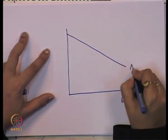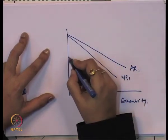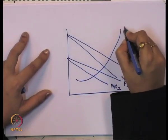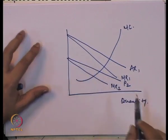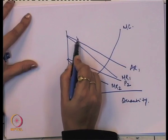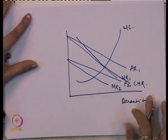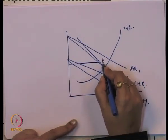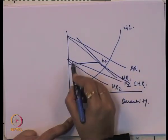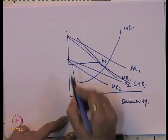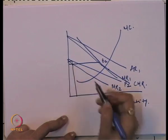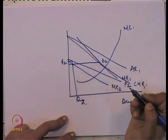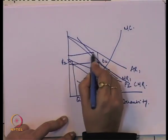If there are two products, we have two demand functions and corresponding marginal revenue functions — P1, MR1 and P2, MR2 — along with the marginal cost. We then get a combined marginal revenue curve, CMR, and on that basis we look at the equilibrium price at point E2.